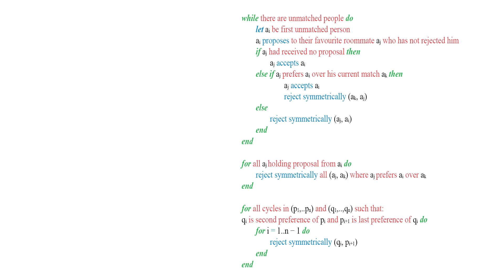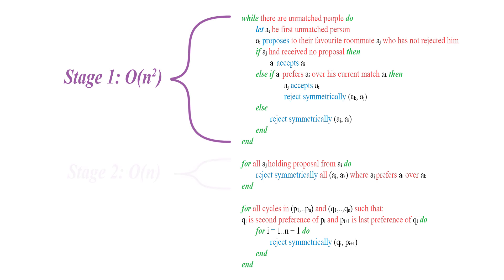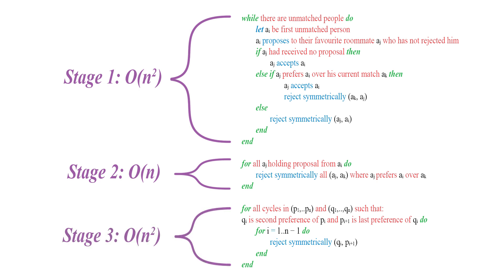Having seen how the algorithm works, let's analyze Irving's algorithm. Here is the pseudocode — you may pause the video if you would like to read it. As you can see from the pseudocode, the worst cases are O(n²) for the first loop, because it is possible to exhaust everybody's preference ranking before it ends. O(n) for the second rejection loop, as you would have to check each person once and the complexity of checking and rejecting is only constant. And O(n²) for the final loop. It is possible that nobody was eliminated in stage 1 and stage 2, leaving a complete table for the last loop to eliminate — in that case, it would take O(n²) time. The asymptotic time complexity would be O(n²).